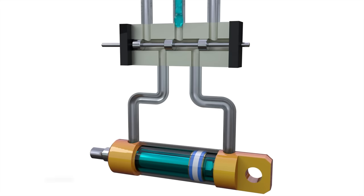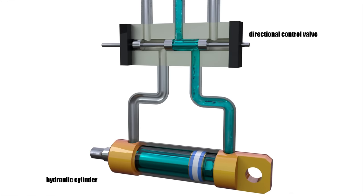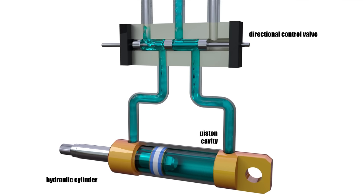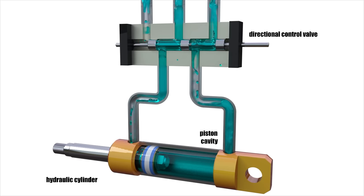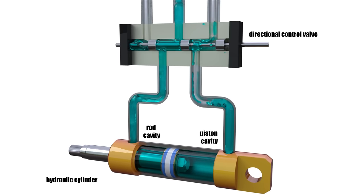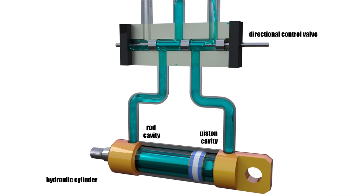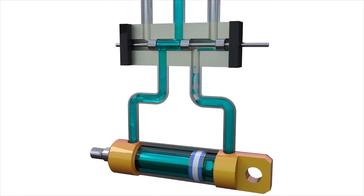In order for a rod of the hydraulic cylinder to start moving forward, it's necessary to direct liquid from the pump into the piston cavity. To push the rod back, it's necessary to direct liquid from the pump into the opposite cavity, the rod one, and allow the liquid from the piston cavity to flow freely into the tank. It turns out that you need to change the routes for the liquid and direct it to different channels.